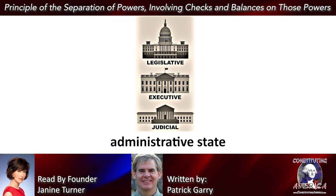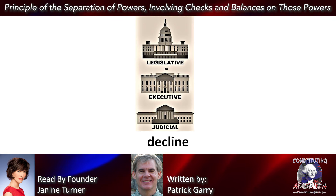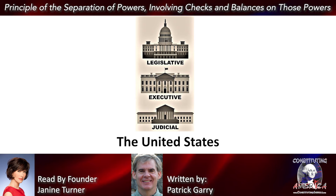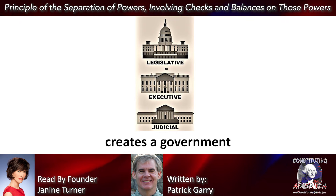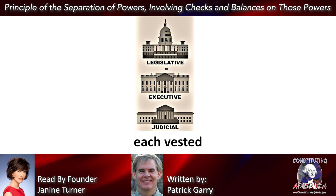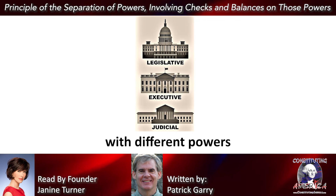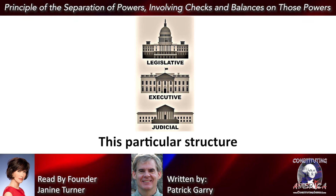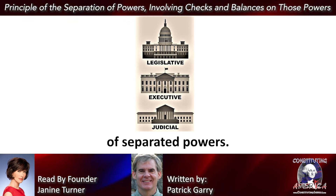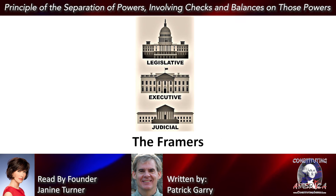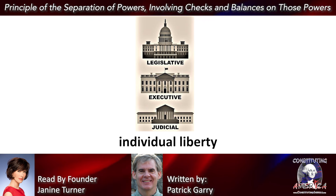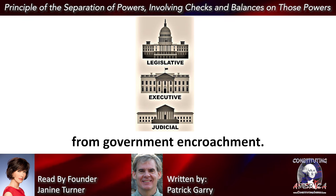The rise of the administrative state meant the corresponding decline of the separation of powers principle. The United States creates a government with three separate branches, each vested with different powers and responsibilities for different functions. This particular structure reflects the doctrine of separated powers. The framers adopted this doctrine so as to diffuse government power and thereby protect individual liberty from government encroachment.